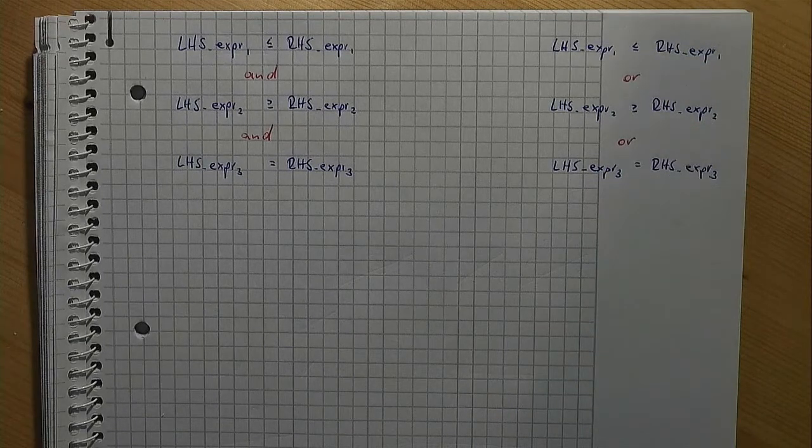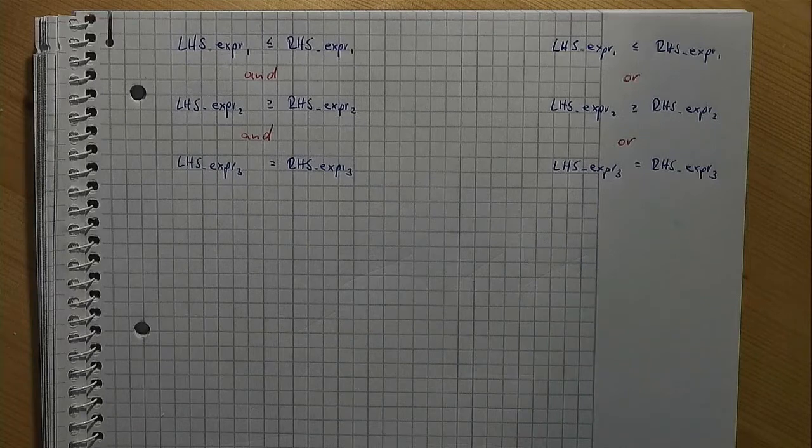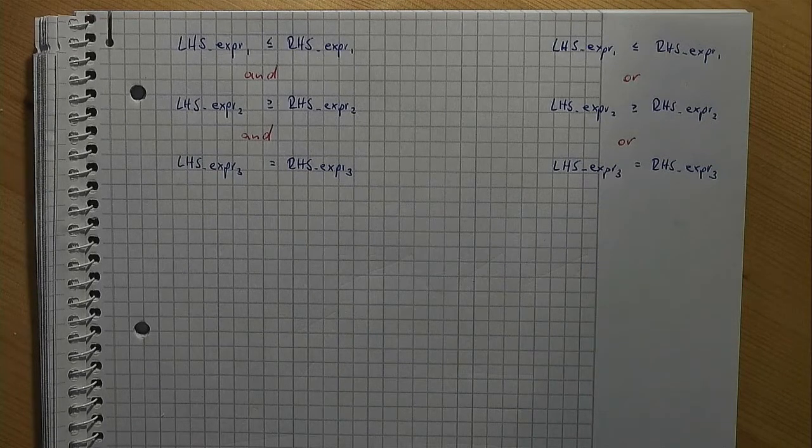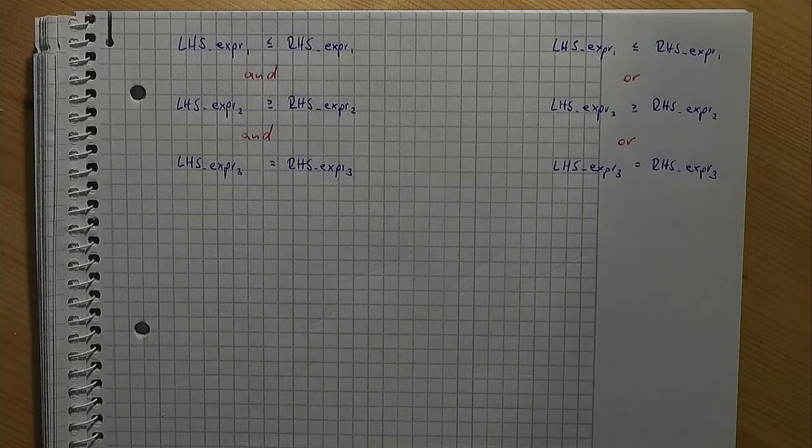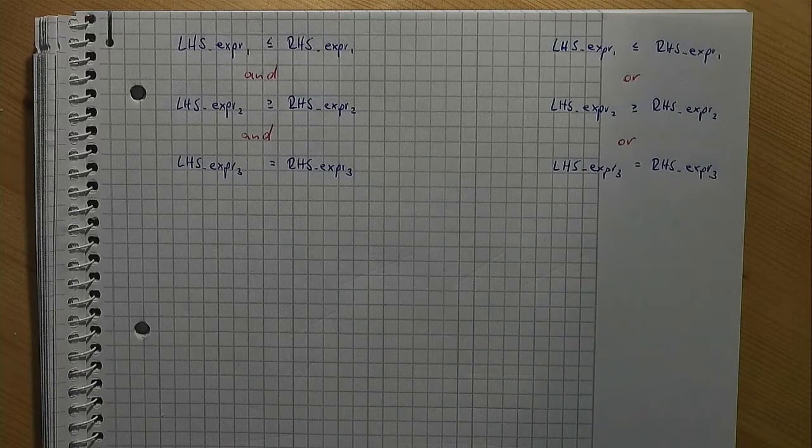The meaning of this should be that a feasible solution must fulfill at least one of the constraints. A feasible solution can fulfill more than one constraint, but a solution would not be feasible if none of the constraints is fulfilled.